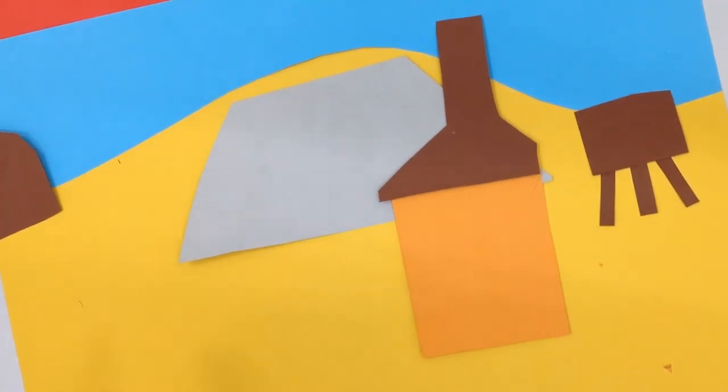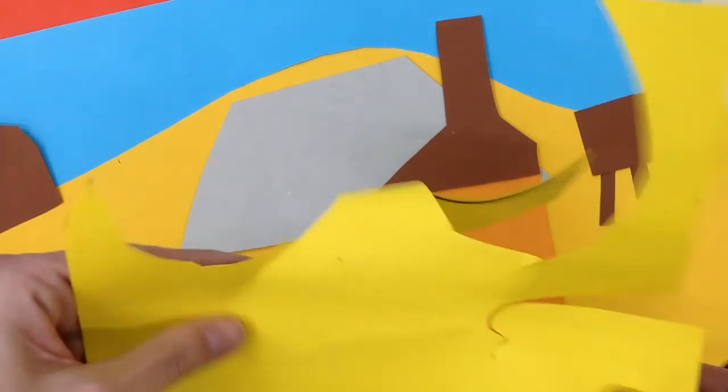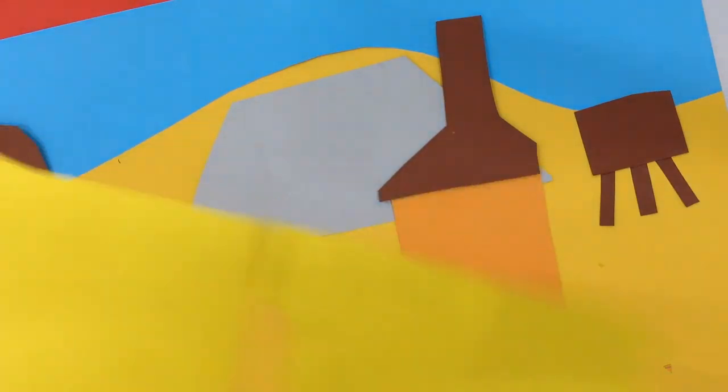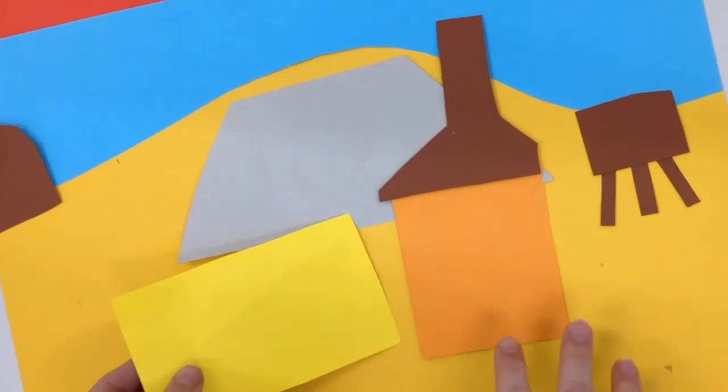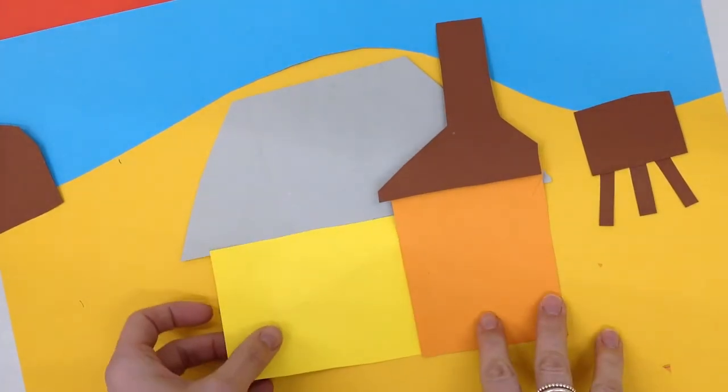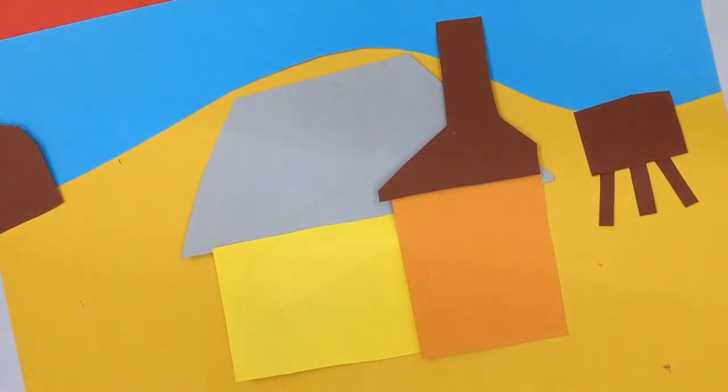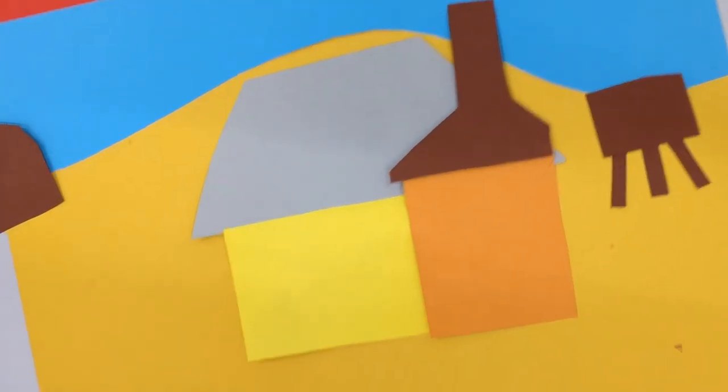Now for my actual building, I might use yellow just so that it stands out. I'm just going to cut another rectangle. Notice how I'm not sticking anything down just yet, and it's because I'm layering, aren't I?